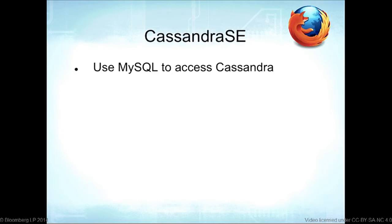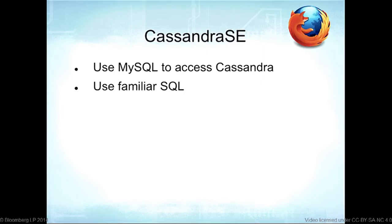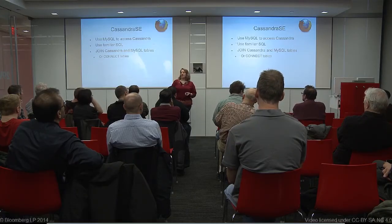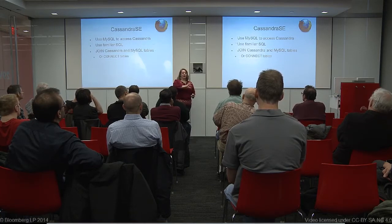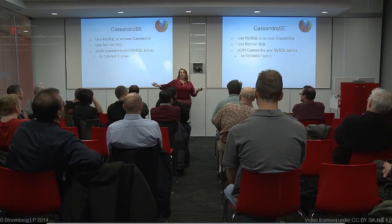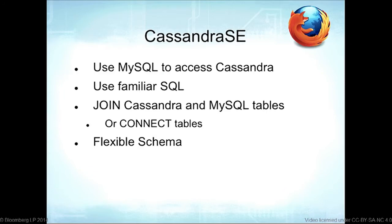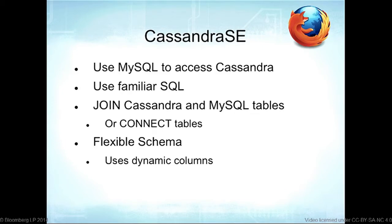The Cassandra storage engine uses MySQL to access an existing Cassandra database. You use familiar SQL to query it, and it enables you to JOIN Cassandra and MySQL tables together. It has a flexible schema using dynamic columns — another MariaDB feature — and you don't need the Cassandra storage engine specifically to use dynamic columns.